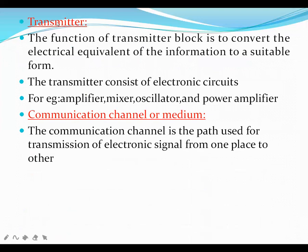The next block is the transmitter block. The function of the transmitter block is to convert the electrical equivalent of information into a suitable form. The transmitter consists of electronic circuits — for example, amplifier, mixer, oscillator and power amplifier.